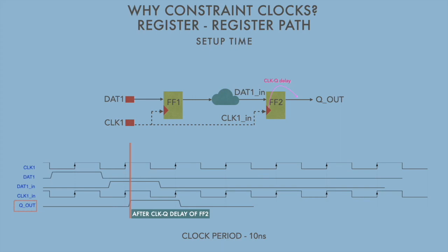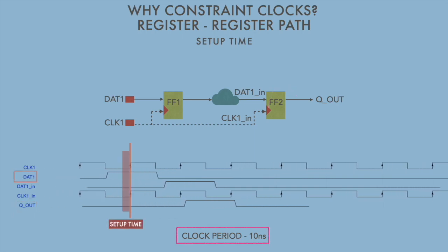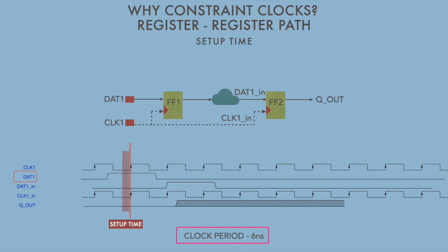Now let's consider a scenario where we reduce the clock period to 6 nanoseconds and see what happens to the working of the circuit. Moving back to a place where data has been asserted. Now I replace the clock with a much faster clock with a clock period of 6 nanoseconds. Data is reliably captured by FF1 because it is stable before the setup time of FF1.